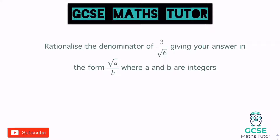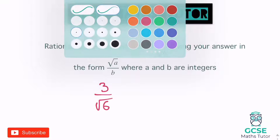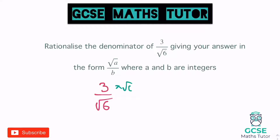Let's have a look at another one — a little bit more lengthy in the wording. Rationalise the denominator of three over root six, giving your answer in the form root a over b, where a and b are integers. So we've got our root six on the bottom. Let's times the top and bottom by root six to get rid of that surd on the bottom. So on the top we get three root six, and on the bottom we get root thirty-six, which is six.